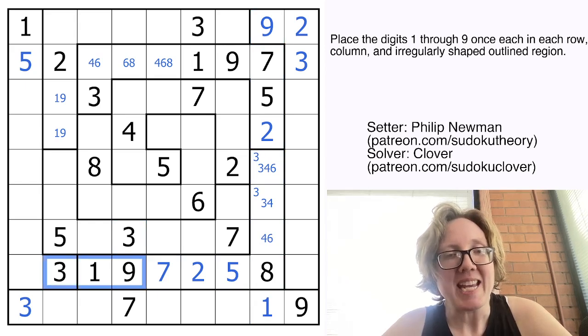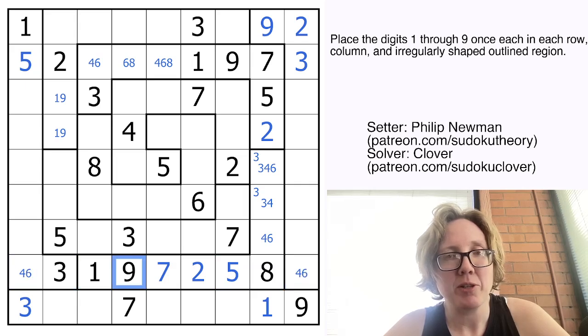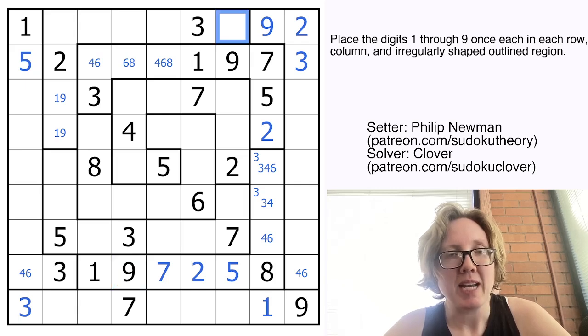Now, row eight is very nearly finished. I need a four and a six to finish that row. And I can't tell which way around those are going to go for me yet. So we'll leave that for just a moment. What else do we have available here?